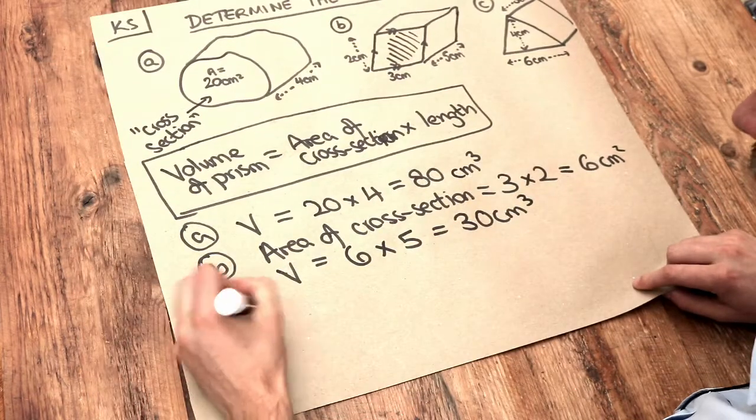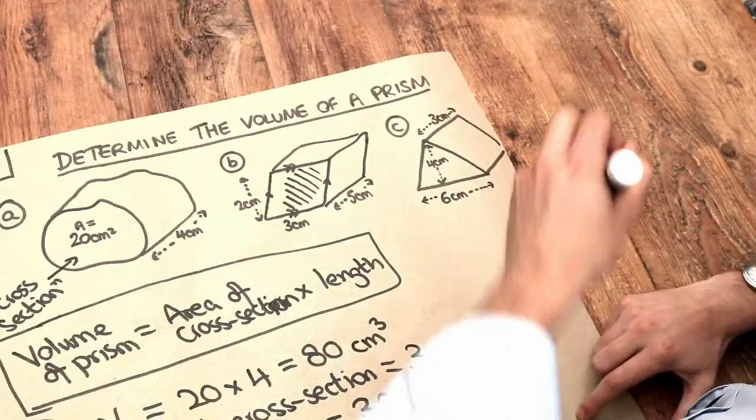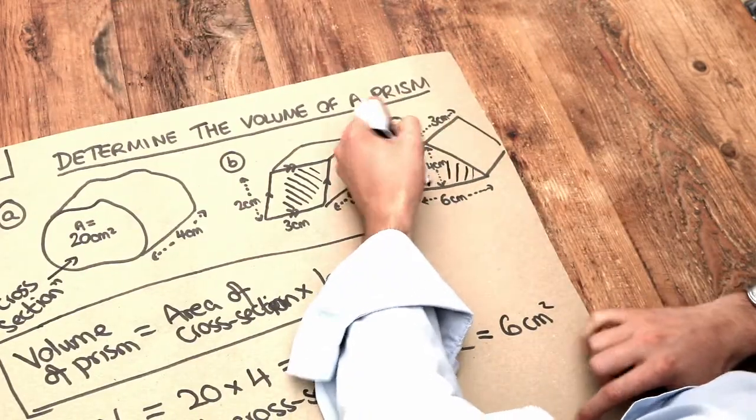And finally, what's the cross section this time? Well it's this front shape here which is a triangle.